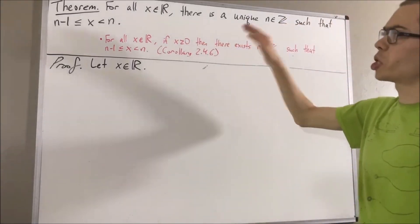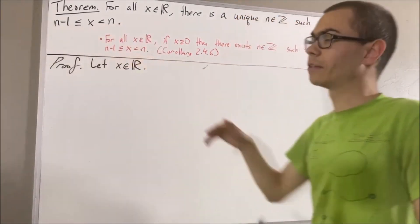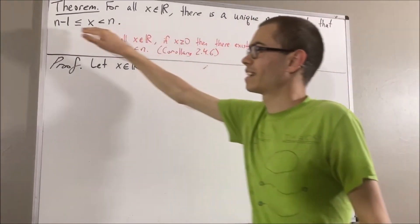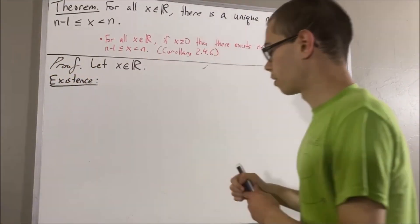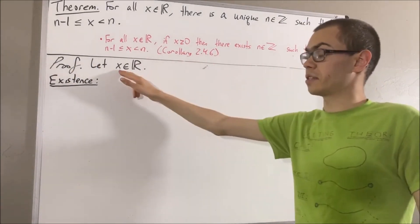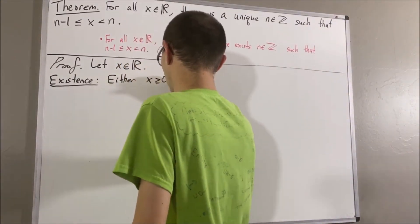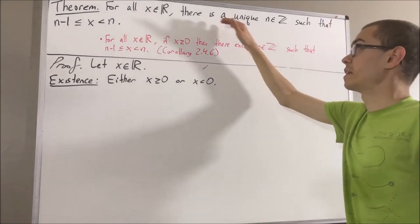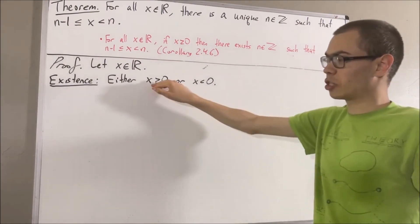Our whole goal from here is to show that there is a unique integer that satisfies this inequality. Let's first prove that there exists an integer that satisfies this inequality, so we'll start with existence. To prove existence, we're going to break this up into two cases: either x is greater than or equal to 0, or x is less than 0.